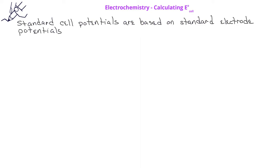Now that we know about standard electrode potentials, we can use these to calculate the standard cell potential for any given electrochemical cell. These standard cell potentials are calculated by taking the standard reduction potential for the cathode and subtracting from it the standard reduction potential for the anode. We designate this with the equation: the standard cell potential is equal to the standard reduction potential for the cathode minus the standard reduction potential for the anode.